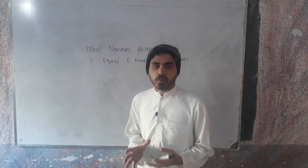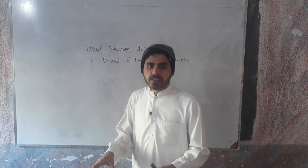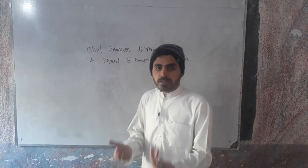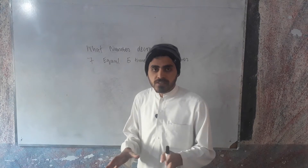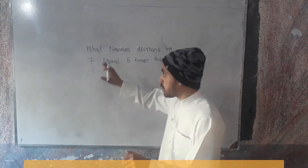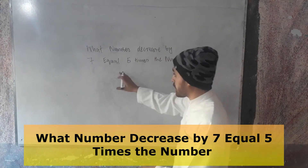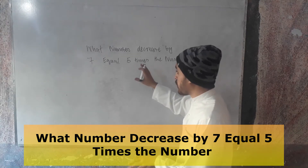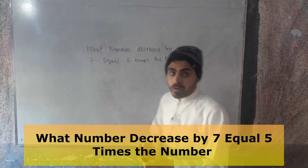In this video, quantitative reasoning is very important — that is the number system, related to the number system. For example: what number decreased by 7 equals 5 times the number?